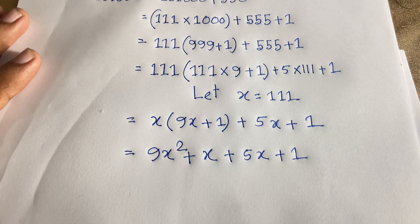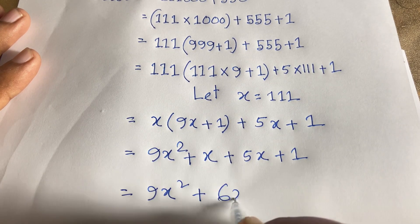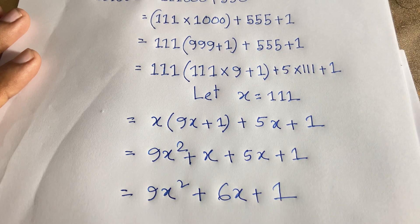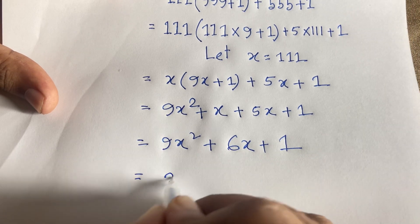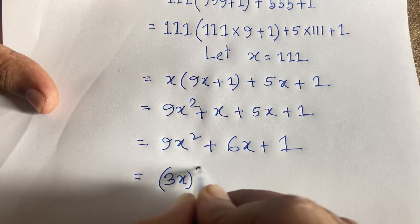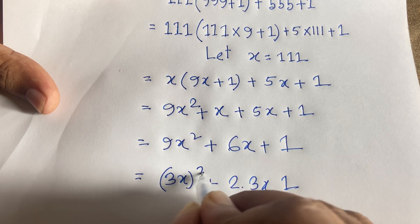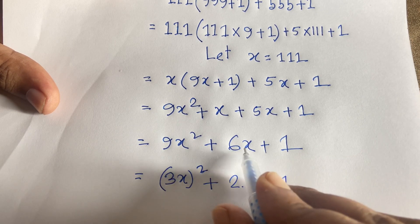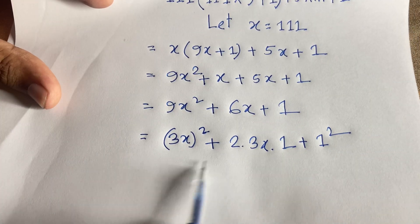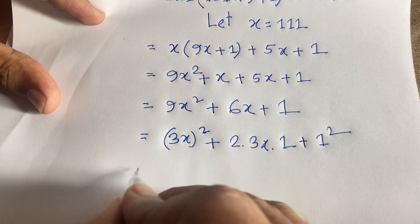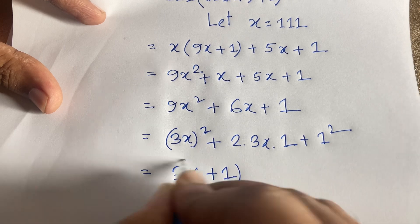Now this equation becomes 9x² + 6x + 1. I can say that 9x² is (3x)², plus 2 times 3x times 1 gives 6x, plus 1². By the algebra rule a² + 2ab + b² = (a+b)², we get (3x + 1)².